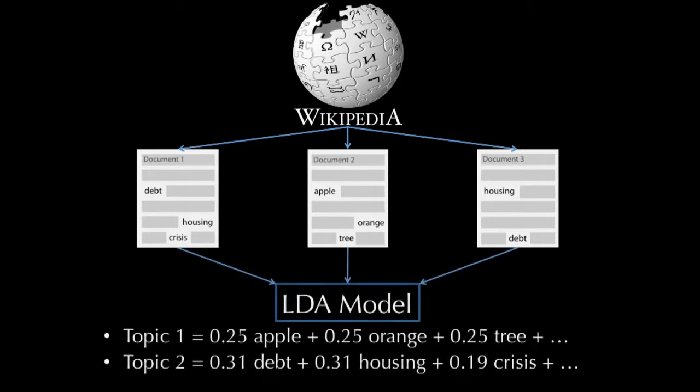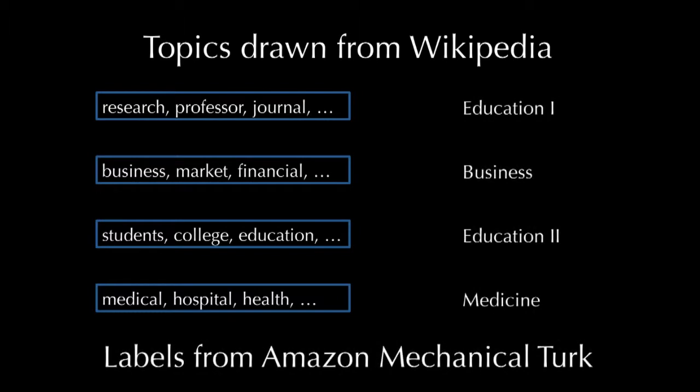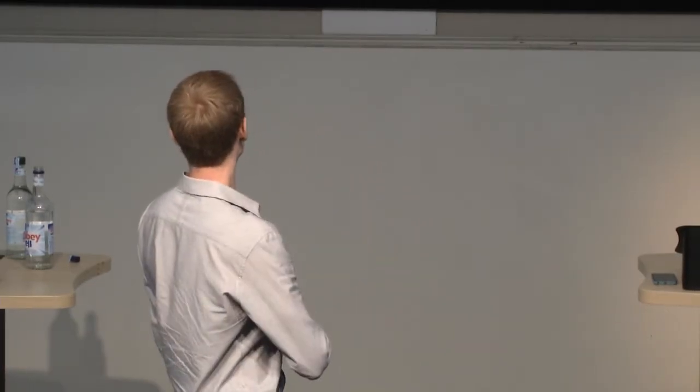If I actually run an LDA on three toy documents, I find two topics: one relating to fruit, and the other relating to debt, housing, and crisis. For the real Wikipedia, here's a sample of results — five arbitrary topics we found, relating to things like academia, business, education, and healthcare. To settle any disagreement about what exactly these topics refer to, we appealed to workers on Amazon Mechanical Turk — a service whereby you can farm out menial tasks to people all over the world for a small fee. We paid workers to essentially take a vote on the names of these topics. Where two different topics were given the same label, I distinguish them with a Roman numeral.